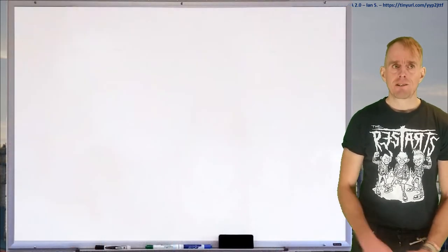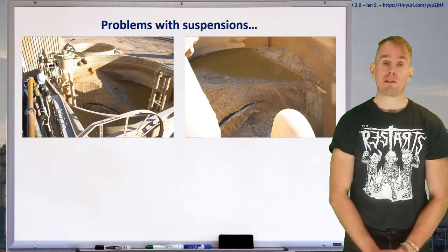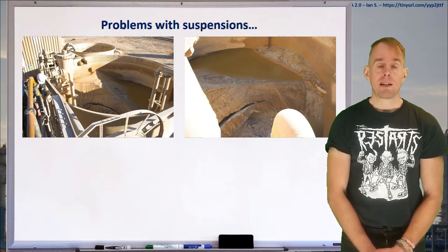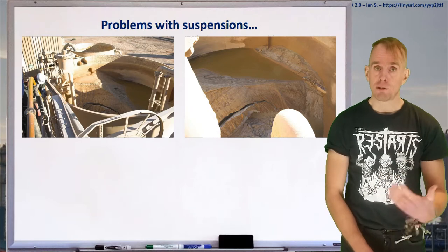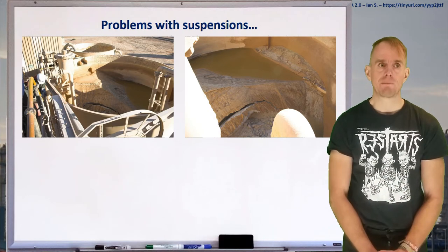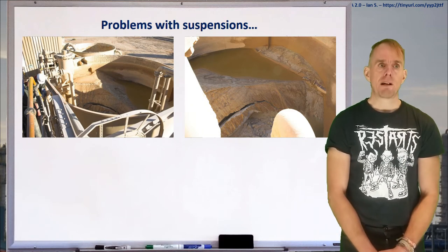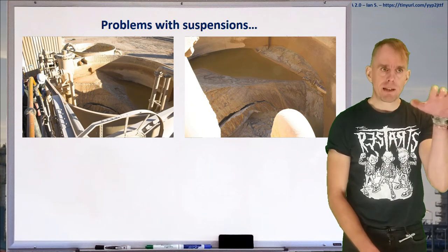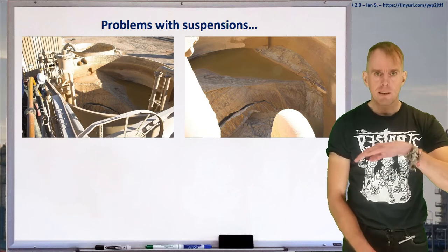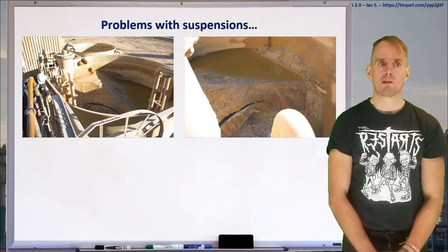We'll start, though, by seeing what can happen if particles come out of suspension. So, on the whiteboard, I've put two photographs for you. These photographs are of an effluent processing tank. The effluent concerned has particles suspended in it, or at least should have particles suspended in it. If you look at the left-hand photograph, near the rim of the tank, if you look down a little bit, you'll see there's a damp mark. That damp mark is the usual liquid level in this tank.